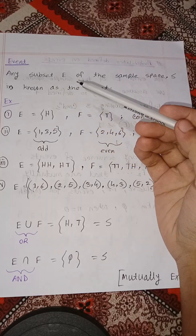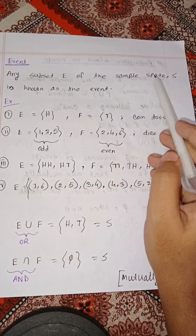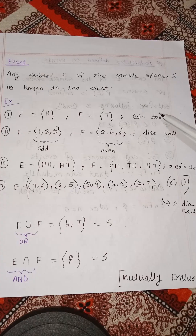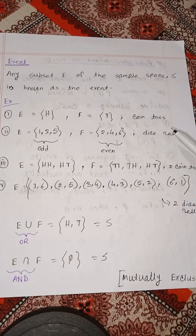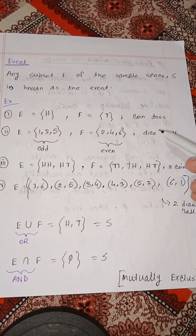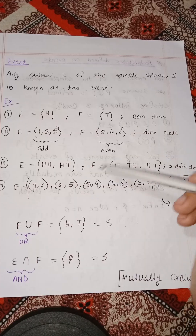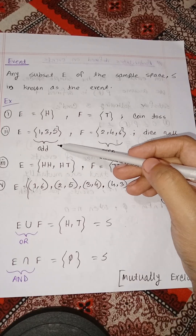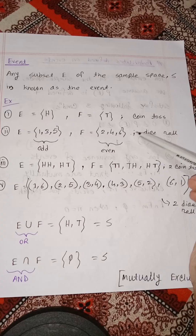Let's see the event. Any subset E of the sample space is known as an event. The possible outcomes for a dice roll are 1 through 6. The odd numbers — 1, 2, 3, 4, 5, 6 — include both even and odd numbers, and the odd numbers form the odd event.